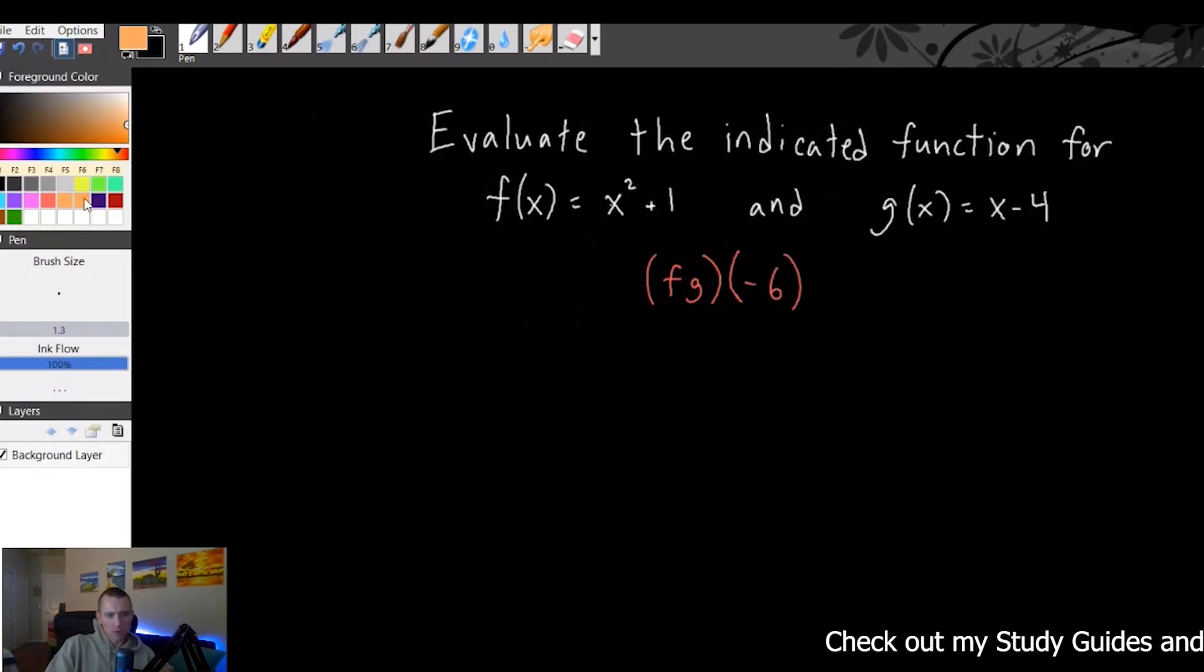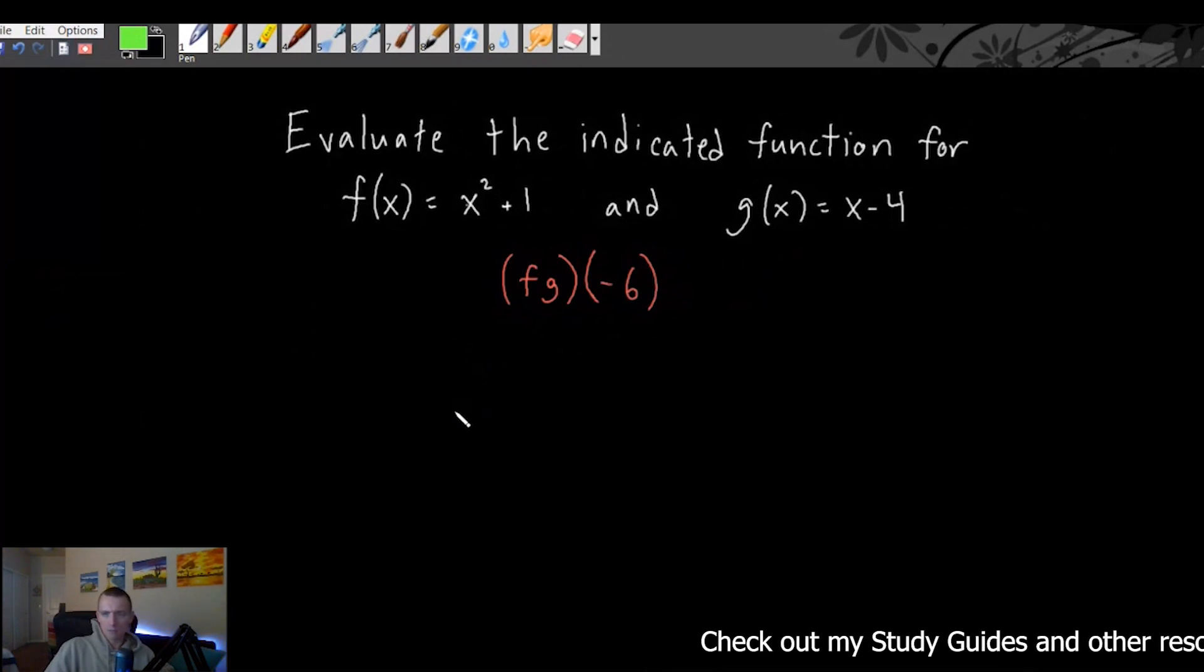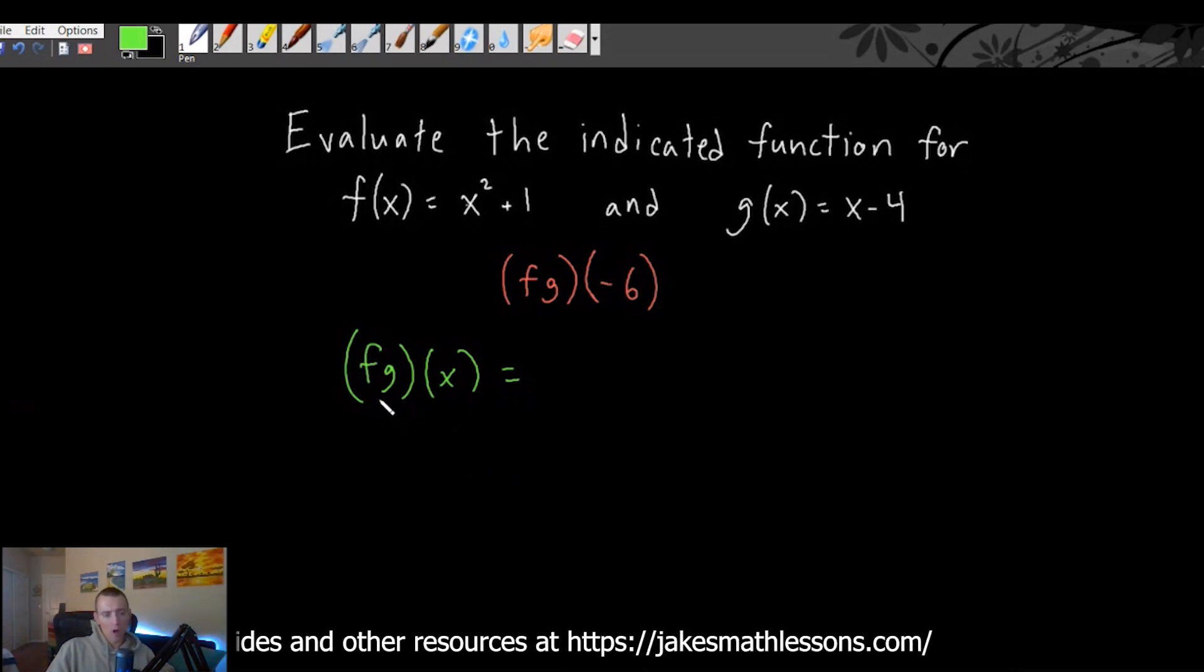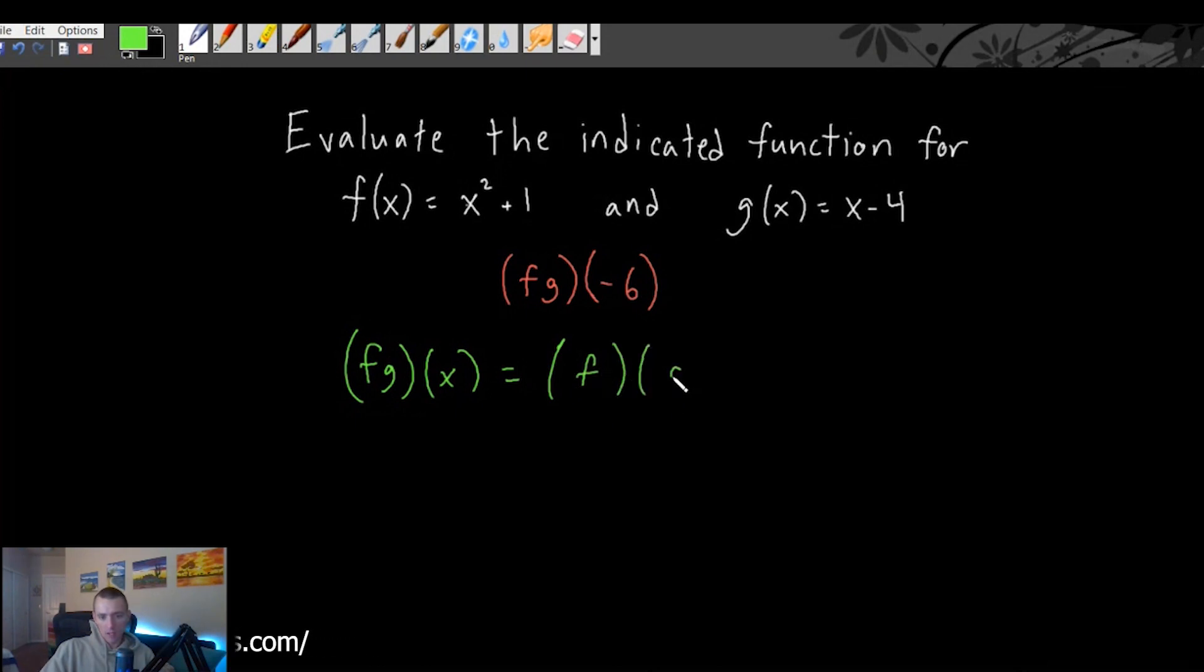So just like we've done in prior examples, first thing we want to do is find f times g of x. So to find that, all we have to do, keep in mind basically whatever operation is happening right here in this set of parentheses, it's saying we want to find f times g.